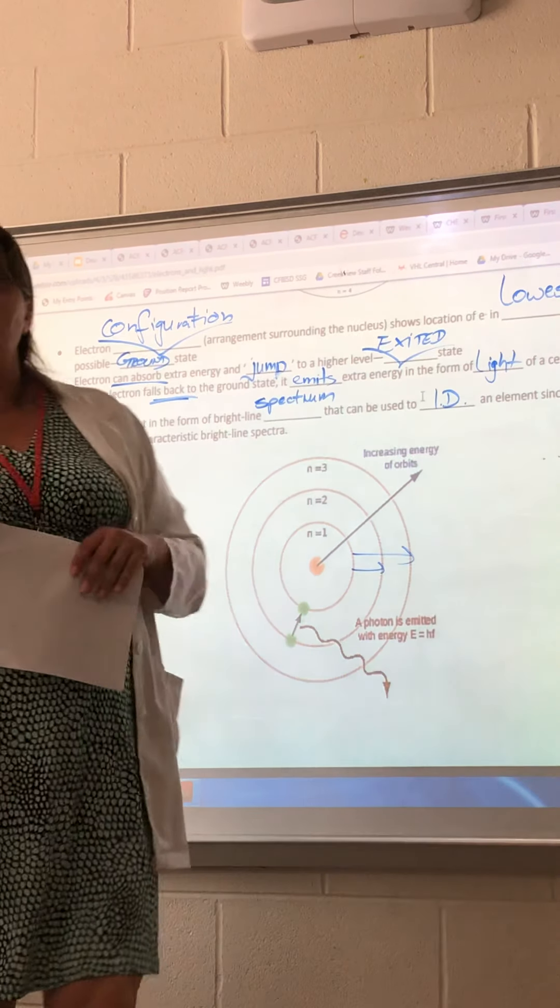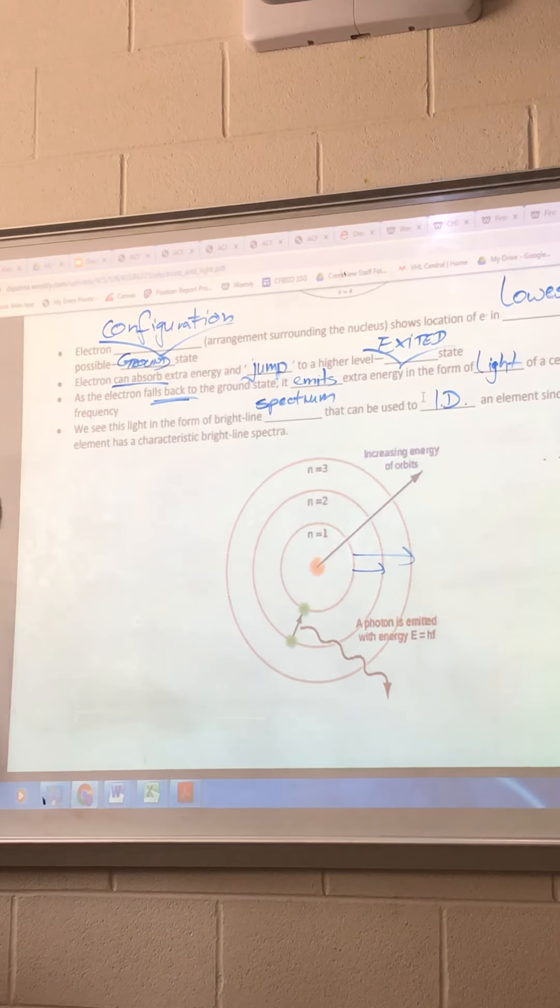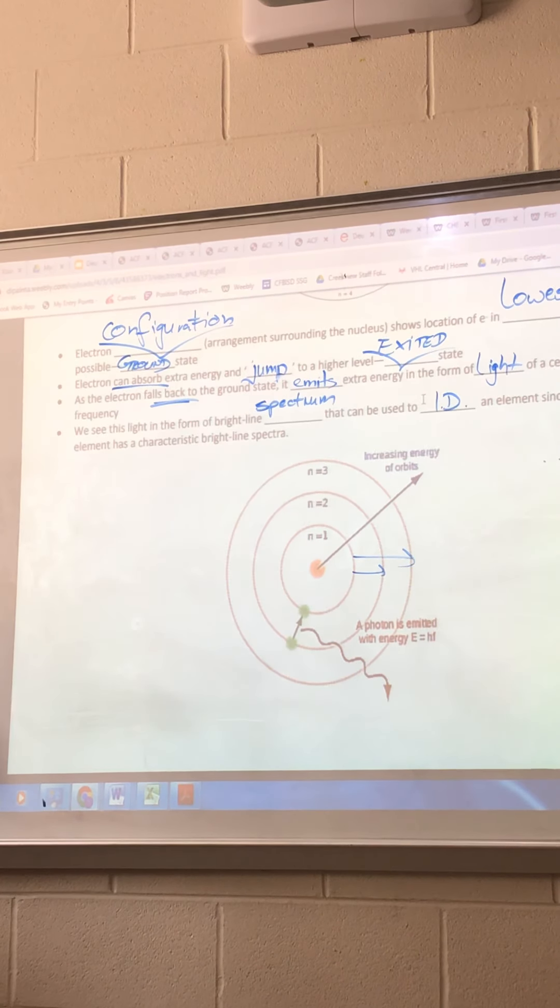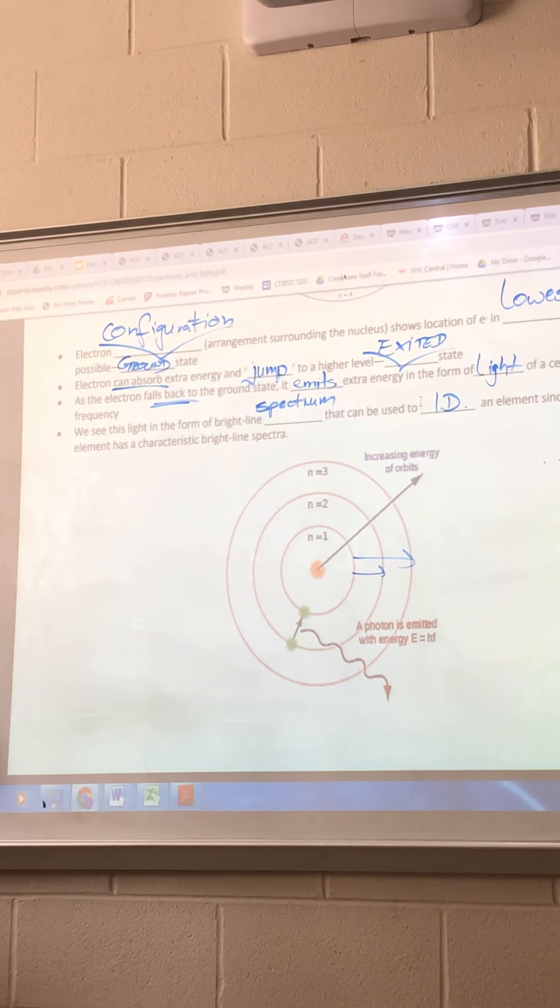All right. So mercury is going to look kind of like a light violet. Then we'll have neons like the orange-yellow. Let's see that. All right. So.